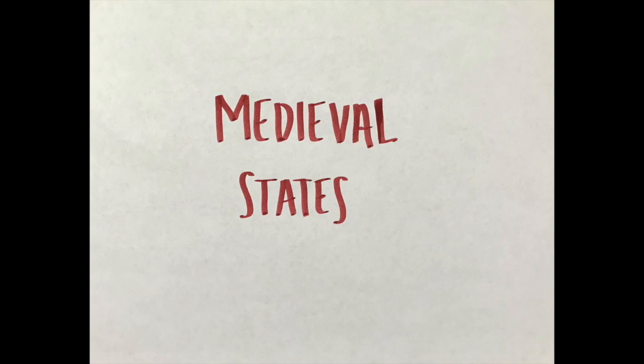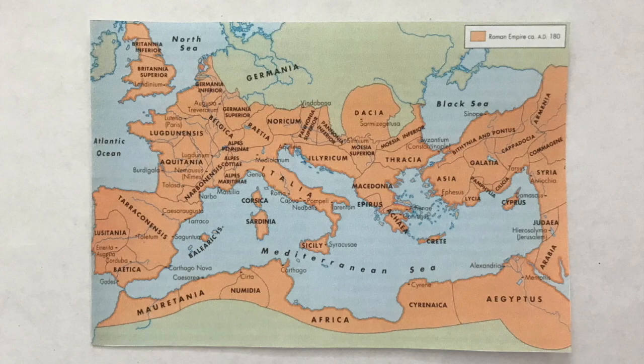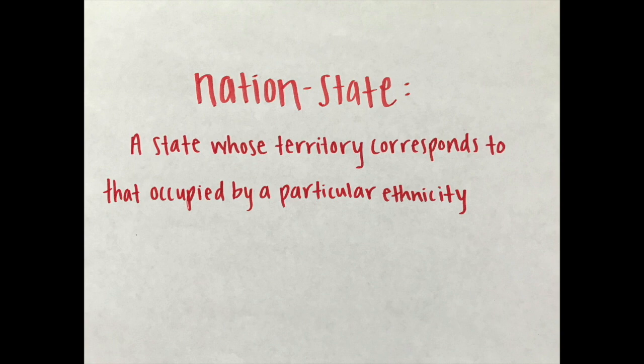Medieval States: Political unity in the ancient world reached its height with the establishment of the Roman Empire, which controlled most of Europe, North Africa, and Southwest Asia. At its maximum extent, the empire comprised 38 provinces. The Roman Empire collapsed in the 5th century. A nation-state is a state whose territory corresponds to that occupied by a particular ethnicity. Ethnic groups have pushed to create nation-states because desire for self-rule is a very important shared attitude for many of them.